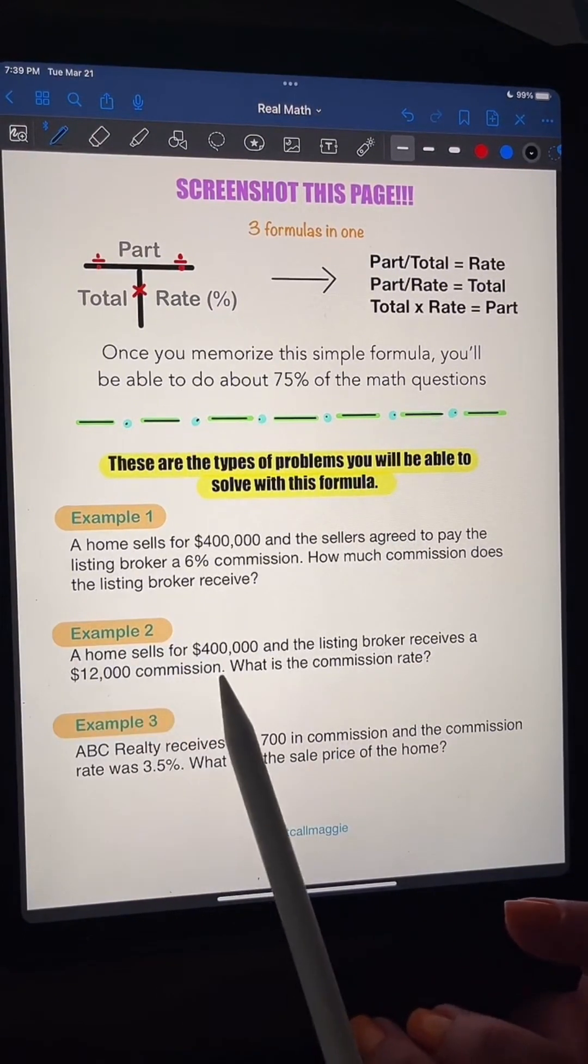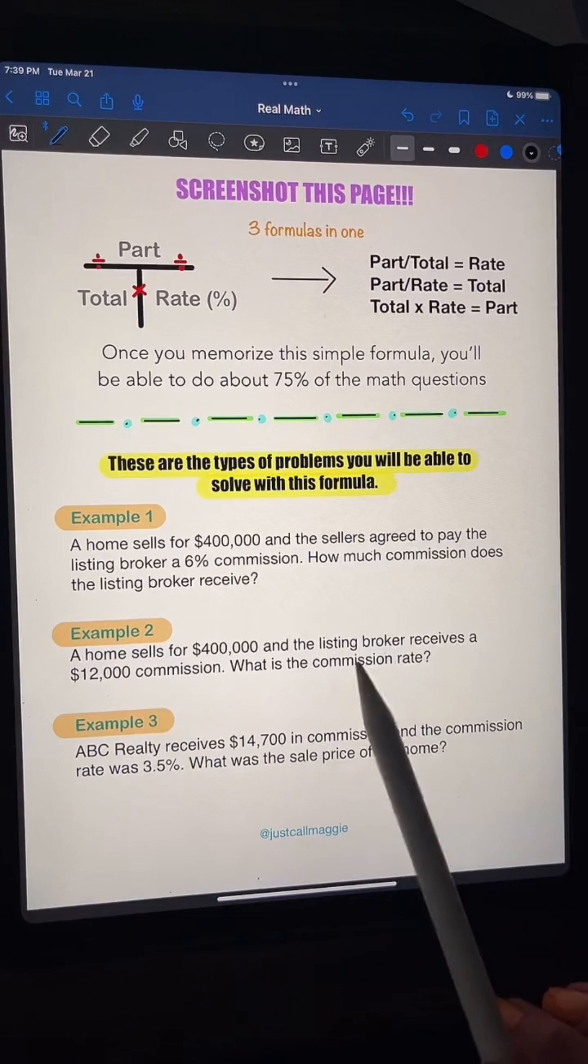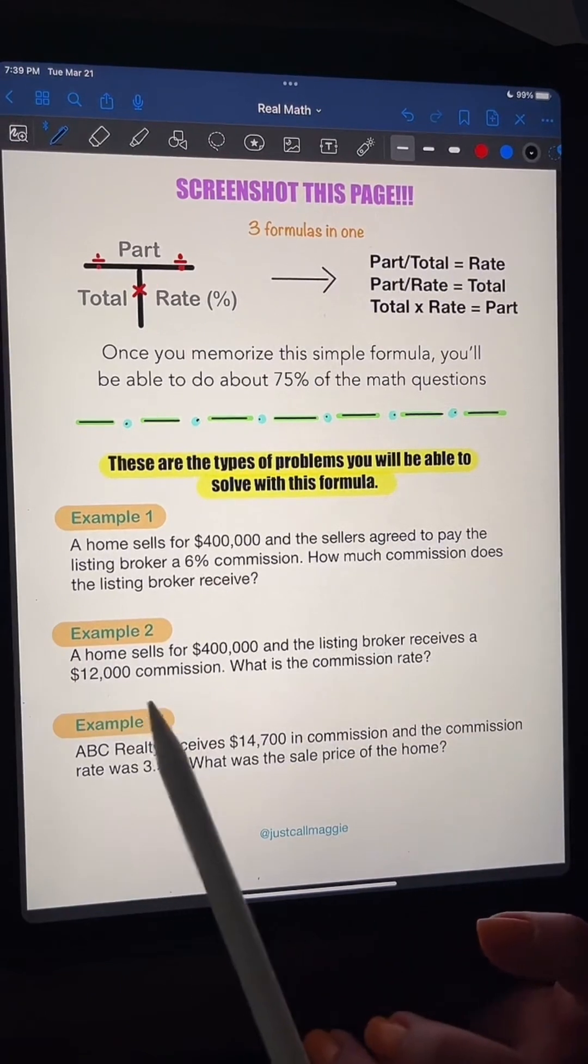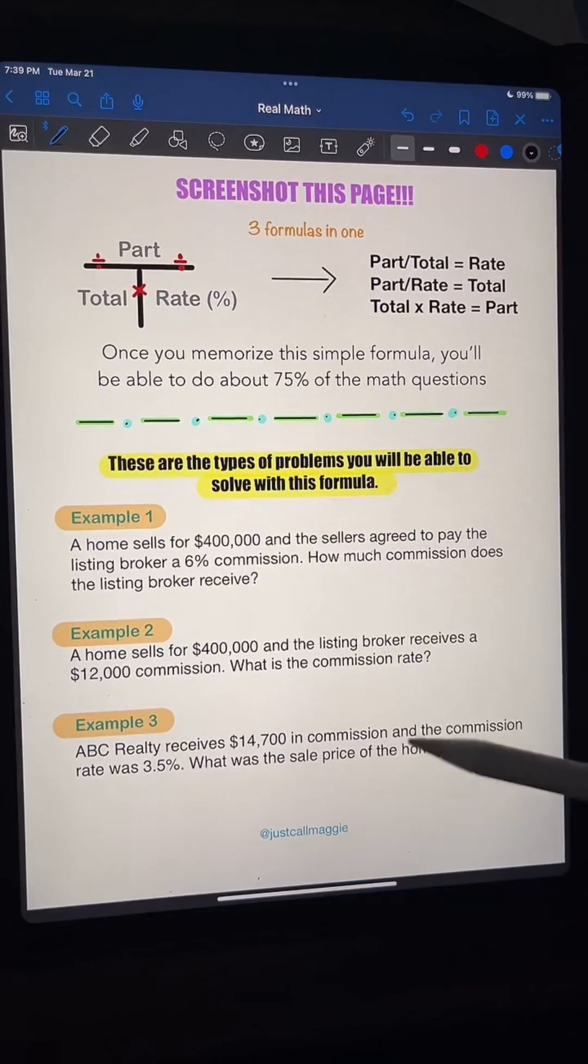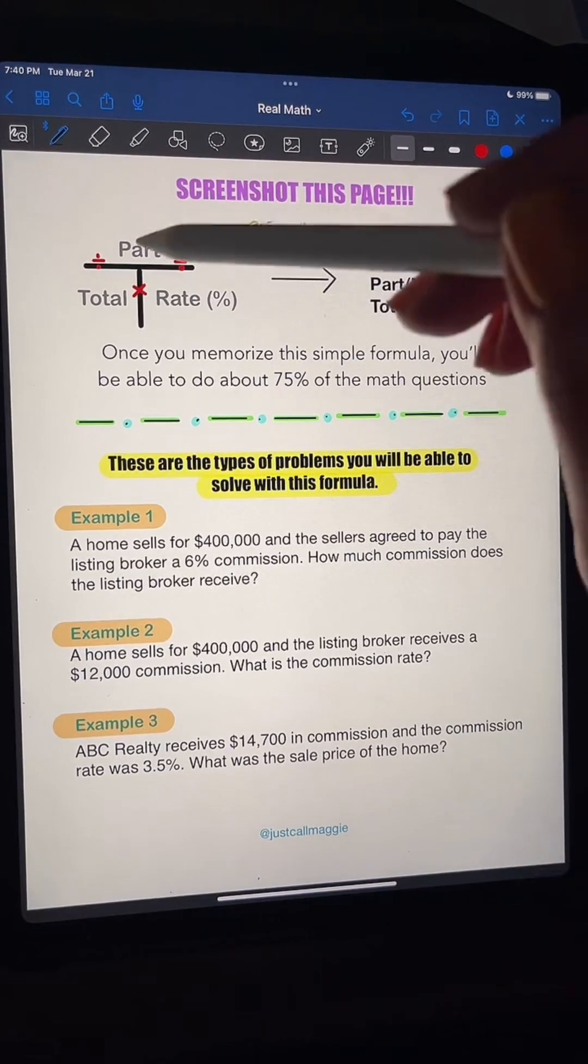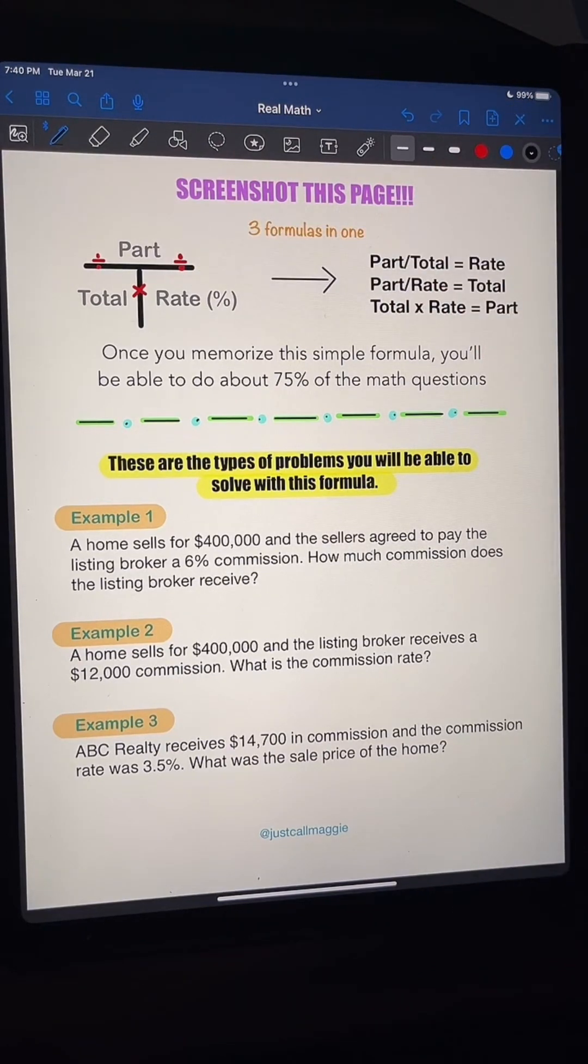Example two, a home sells for $400,000, and the listing broker receives a $12,000 commission. What is the commission rate? Holy cow, these are like horrible. I know that we're all cringing right now because these are the ones that kill us. But this simple little thing is going to help us so much. Watch.